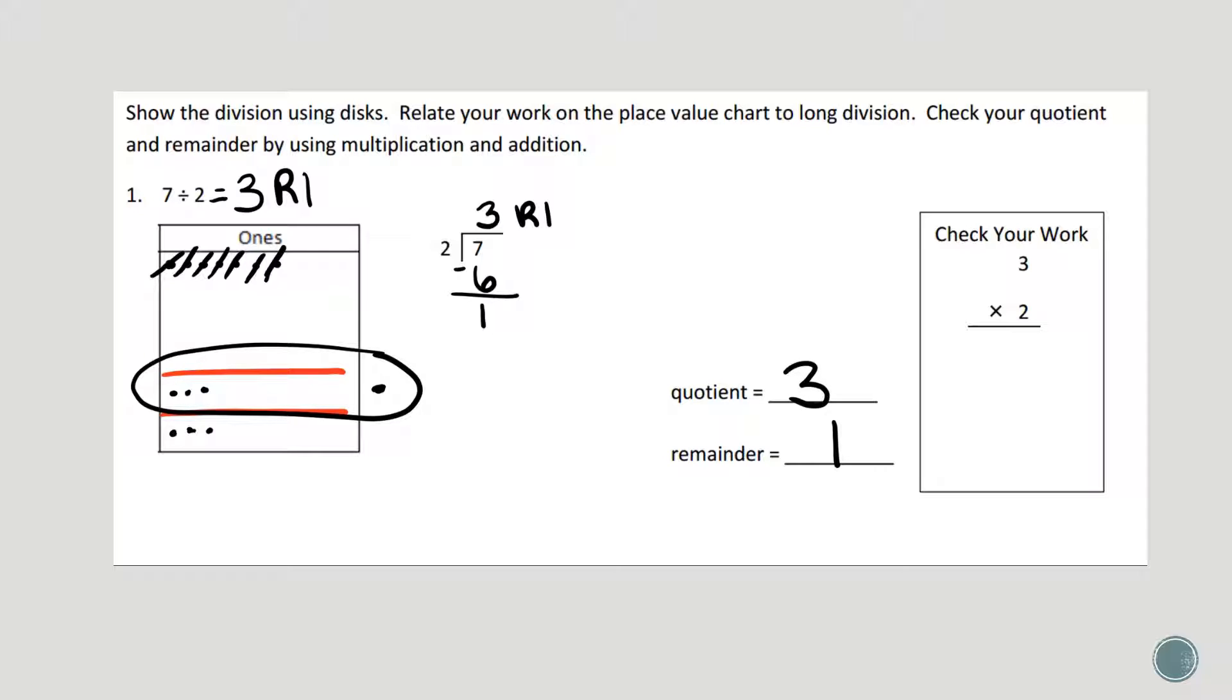Now we can check our work using multiplication. So I'm going to take my quotient, 3, and multiply it by my divisor, 2. And 3 times 2 is 6. But that doesn't match my dividend and that's what I'm trying to get back to. I'm trying to get back to that 7.